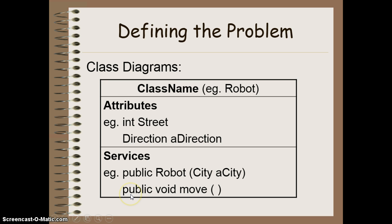I'd have all of its services as well, like the move method. In this case there would be no parameters. I might have the turn left method, get intersection, all that kind of stuff that I might have as part of a robot class.